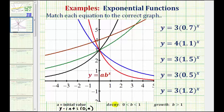If the base b is between zero and one, we have exponential decay, which means the function would be decreasing — from left to right, the graph would be going downhill. And if b is greater than one, we have exponential growth, which means the function is going uphill from left to right.